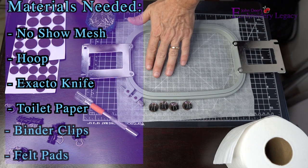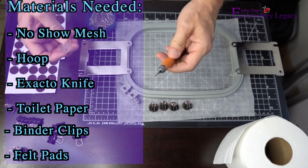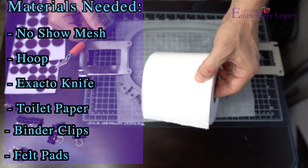For this project you'll need no-show mesh stabilizer, a hoop, an exacto knife, toilet paper, binder clips, and felt pads to create four of our custom clips.